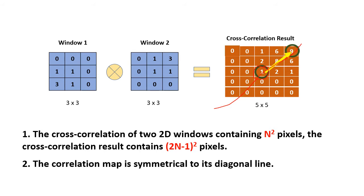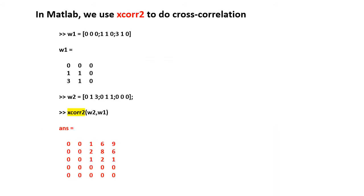In MATLAB, the 2D case is slightly different — we use xcorr2 to do the cross-correlation. The script uses exactly the same windows, window 1 and window 2, and we call xcorr2 to generate the cross-correlation map. That's how we can conveniently do 2D cross-correlation in MATLAB. I hope you enjoyed this explanation of cross-correlation for PIV applications.